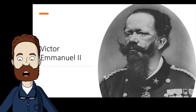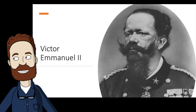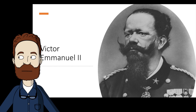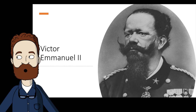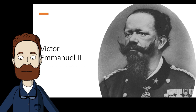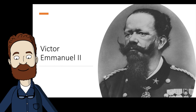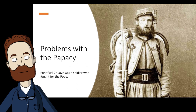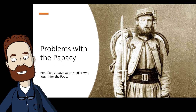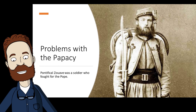The only thing that remained was the annexation of Rome. The eternal city resisted conquest because of the protection afforded to the Pope by Napoleon III. But in 1870, the outbreak of the Franco-Prussian War compelled Napoleon III to withdraw his troops, and shortly after, Italian soldiers occupied Rome. In July of 1871, Rome was made the capital of a united Italy.